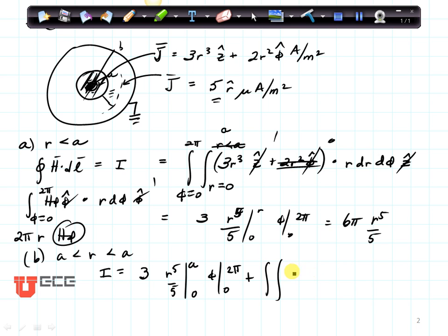And we're going to dot that with r, dr, d-phi in the z direction. The integral that I would be doing is from 0 to 2π, and from r equals a to b, because that's where this current resides.